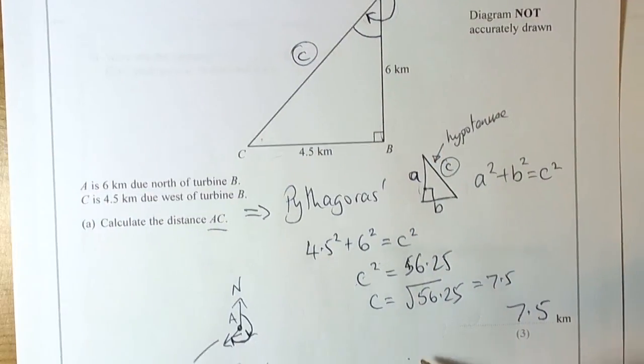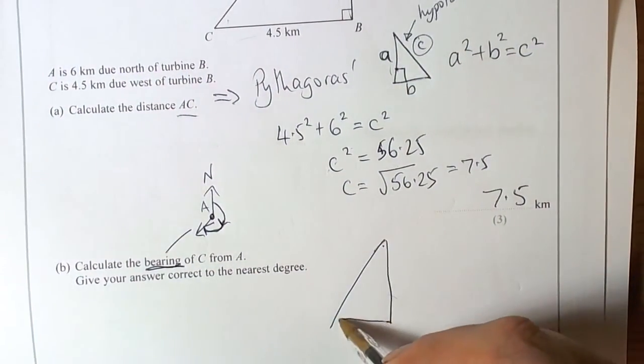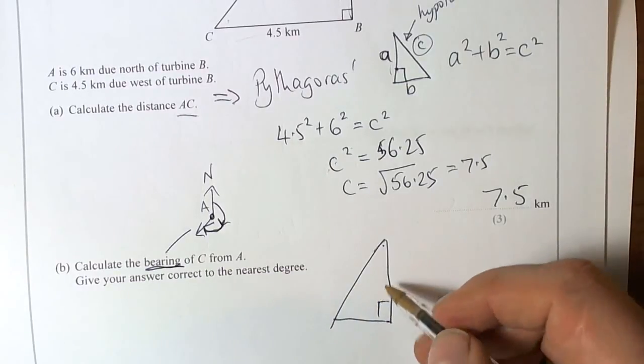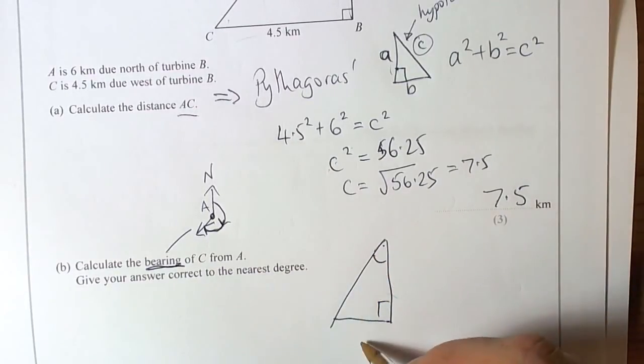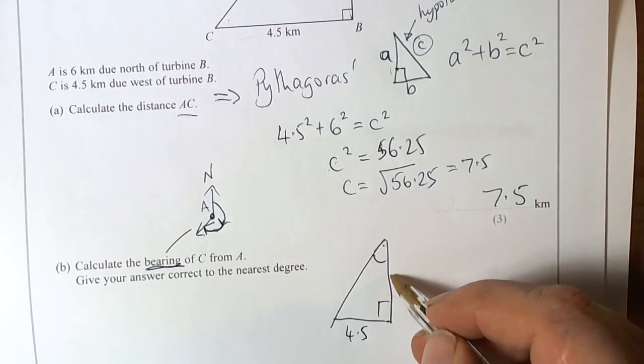If we sketch that out, then we can see that what we have got is a right-angle triangle where we want that angle, and we are told that that is 4.5 and we are told that this is 6.